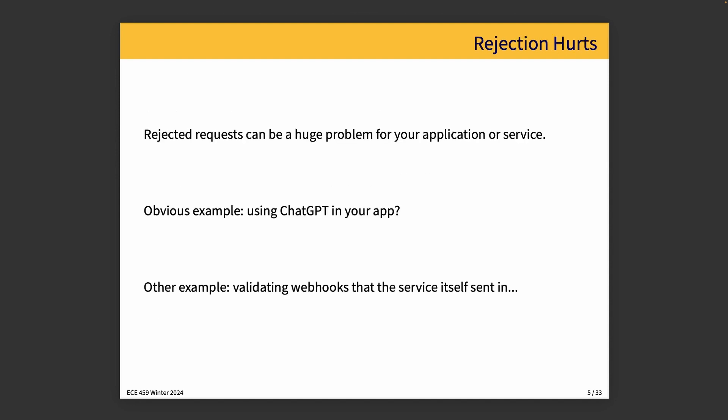Rejected requests can be a huge problem for your application. An obvious example: if your app uses ChatGPT to summarize requests and you run up against a rate limit, some aspect of your application is not working. Depending on how heavily you rely on the ChatGPT API, that might be a huge problem — your app is down or some users are having a bad experience. Sometimes this is what happens when you rely on a third-party service.